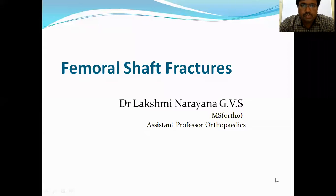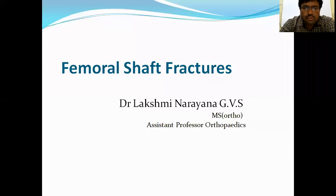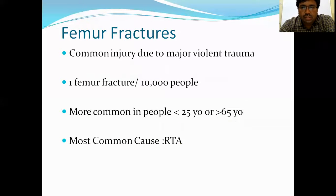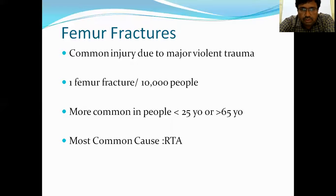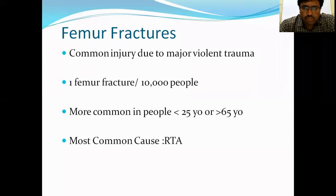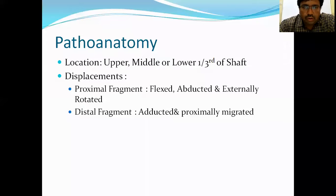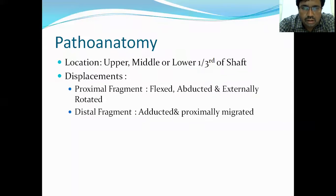Today I'll be speaking about femoral shaft fractures. Femoral fracture is the most common injury due to high velocity trauma; it occurs in one in 10,000 people. It most commonly occurs in active patients less than 25 years of age, or osteoporotic patients over 65 years. The most common cause is road traffic accidents. The fracture can occur anywhere in the femur — upper, middle, or lower one third.